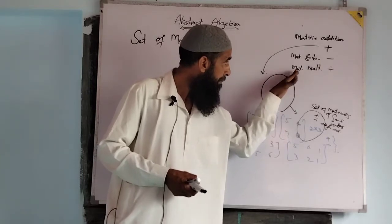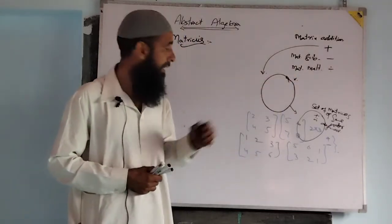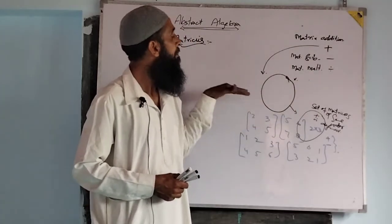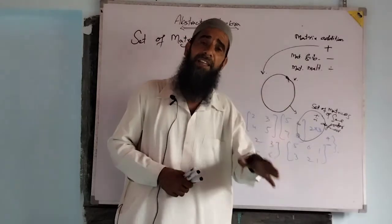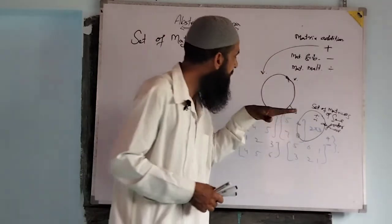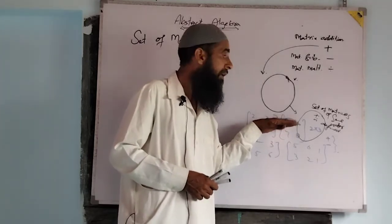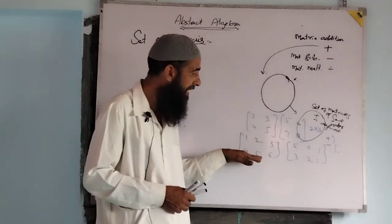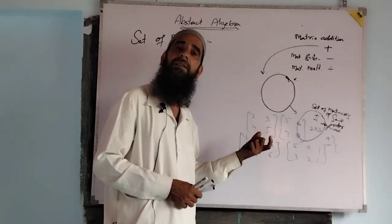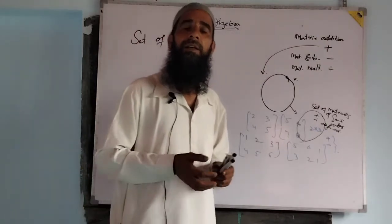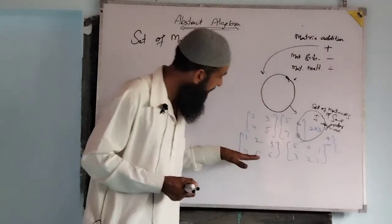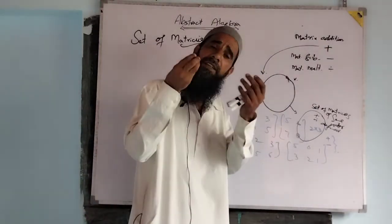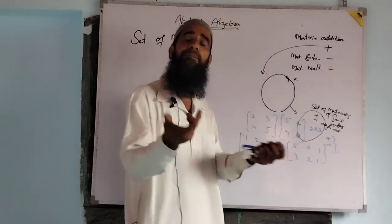What happens with matrix multiplication in such cases? अगर two cross two set of matrices होगा, addition is binary operation, subtraction is binary operation, and multiplication is also defined, and the resultant matrix is also a two cross two matrix — so product is also a binary operation. But for a set of matrices of order two cross three, matrix multiplication ही defined नहीं है, तब जाके binary operation कैसे बन सकता है।